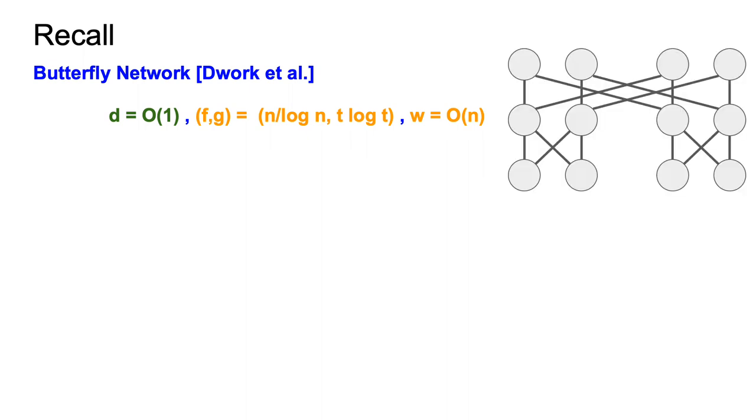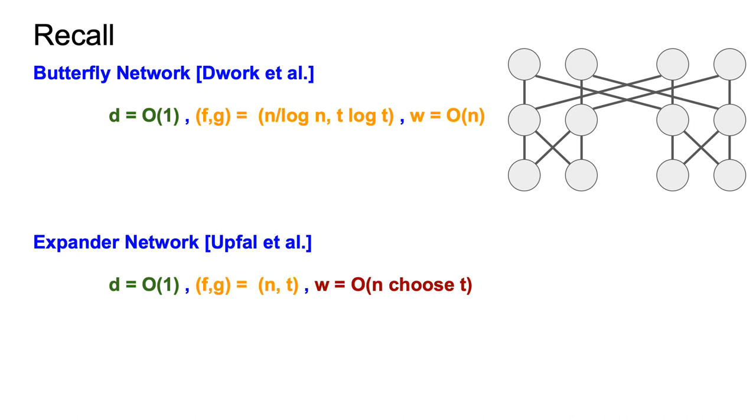Before we get to our constructions, we recall two building blocks that we will use from previous work. Dwark et al.'s butterfly network has constant degree, is n over log n, t log t resilient, and admits a protocol with linear work. Upfel et al.'s expander network has constant degree, is n t resilient, and admits a protocol with exponential work. We illustrate each network pictorially with the graph on the right.